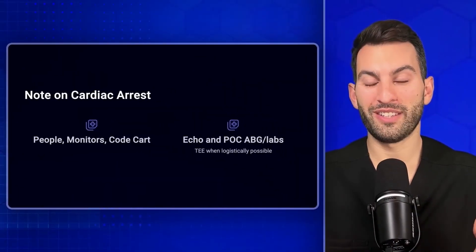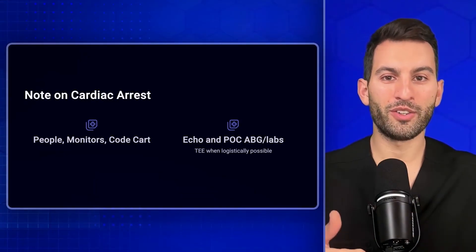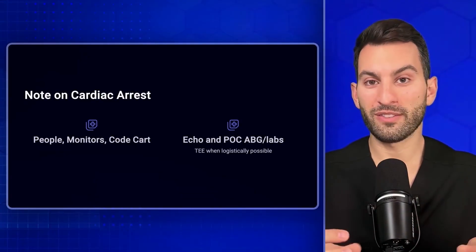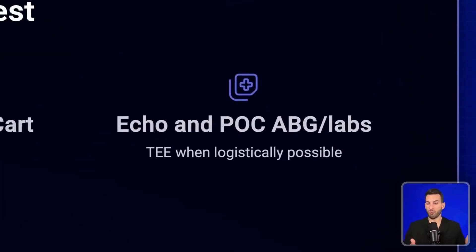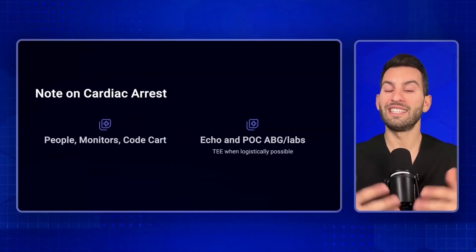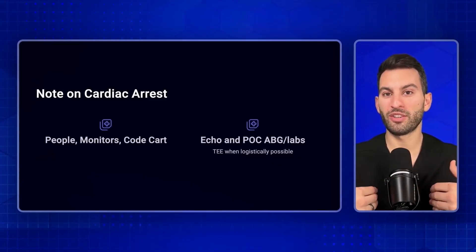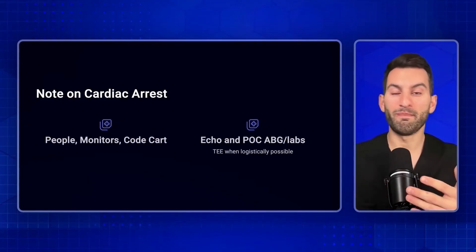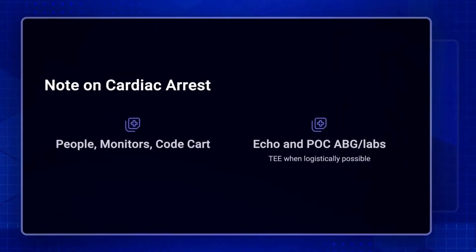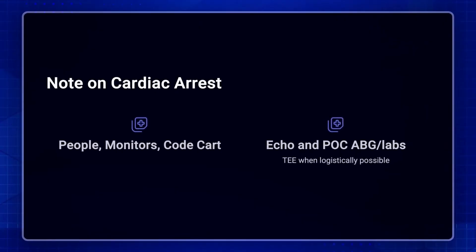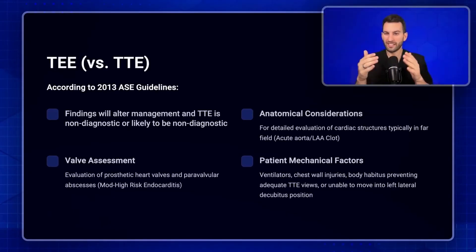A quick note on cardiac arrest: in addition to always asking for people, monitors, and the code card, there are two things I will always ask for in every cardiac arrest — one is echo, and two are point-of-care ABG and labs if available. I will always ask for TEE if logistically feasible. TEE is far quicker at giving a definitive diagnosis and much easier when chest compressions are happening than trying TTE, which may not yield adequate views. This has served me well in diagnosing intraoperative pulmonary emboli, severe tamponade, and severe vasoplegic shock.